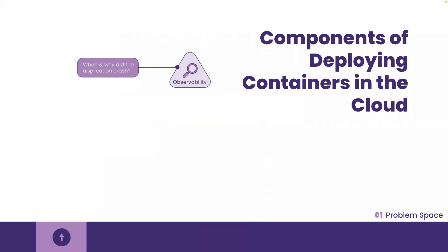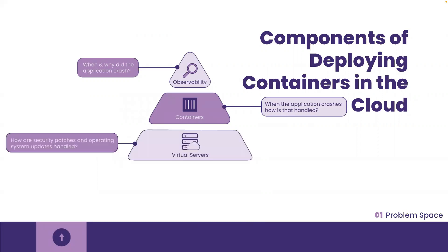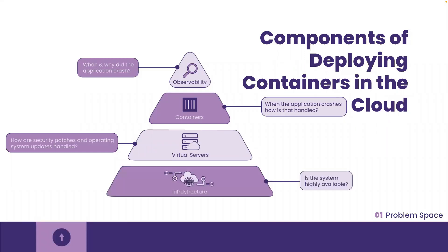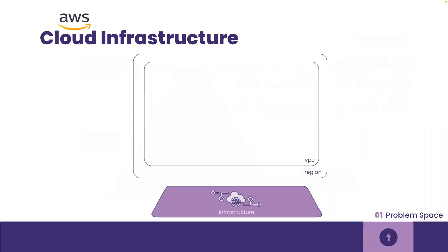So far we have talked about the need for containerized applications to be deployed with observability so that developers have better insights into where their application is crashing, and how using a container orchestration tool reduces the manual effort of restarting the application in the case of a crash. Containerizing the application instead of deploying directly on a virtual machine reduces dependency issues and ensures faster deployment. Let's look at what infrastructure is necessary for a containerized application to be deployed on the cloud, with AWS as an example. For AWS, the virtual private cloud is a logically isolated section of the cloud in which applications run in a controlled, private, and secure manner.